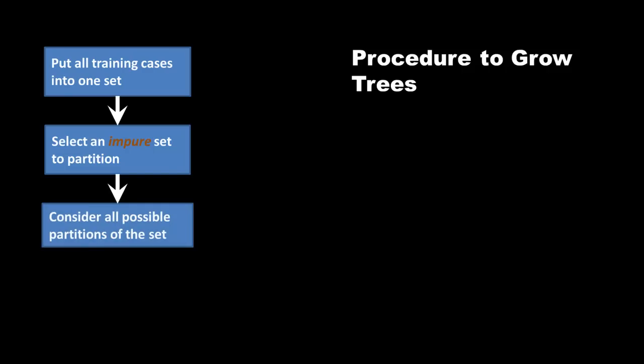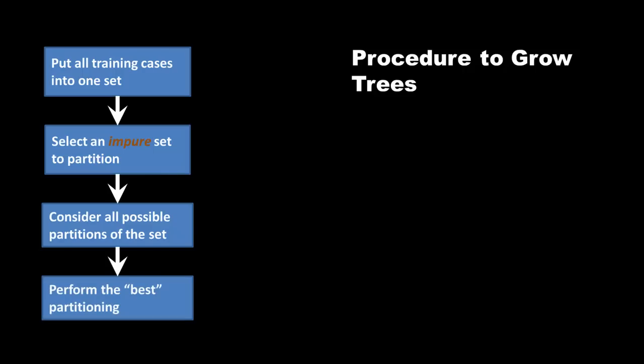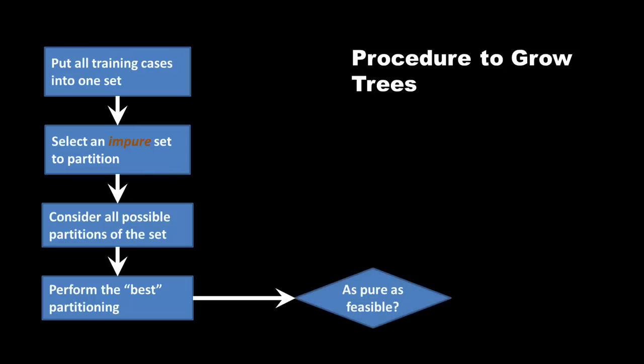Now, how do you select a set? We will look at that shortly. But the procedure says select a set, so we select one. And then we consider all possible partitions of the set, all the possible partitions. Again, we will see what those are. And then for each partition, we will see the extent to which it creates homogeneous groups. And then we choose the one that does the best job of creating homogeneous groups. Once again, what do you mean by best? Hang on, we will get there. And then we say, well, are all the groups we have as pure as is possible? If that is the case, we stop. We are done. We have done the complete partitioning, and we can see the tree from this.